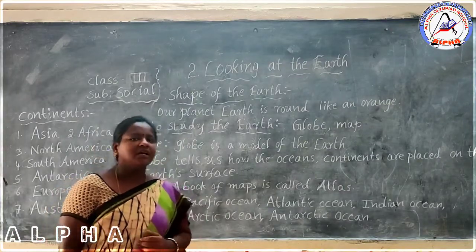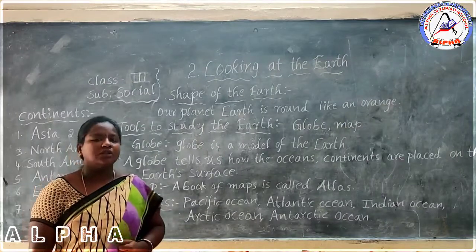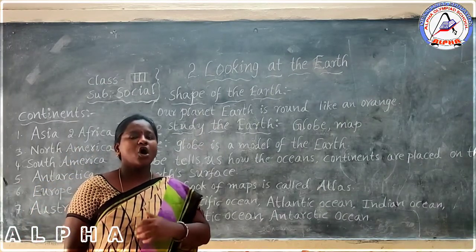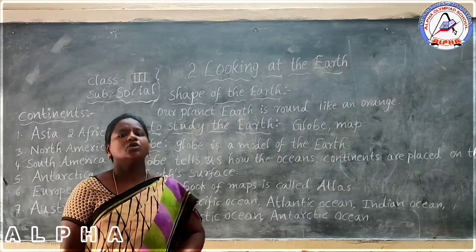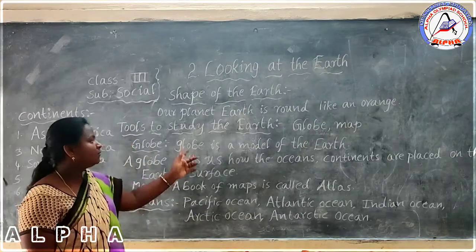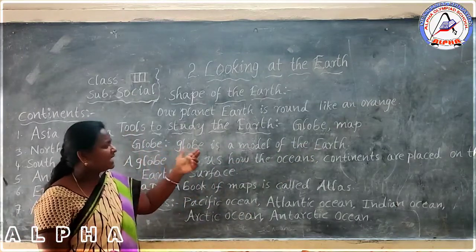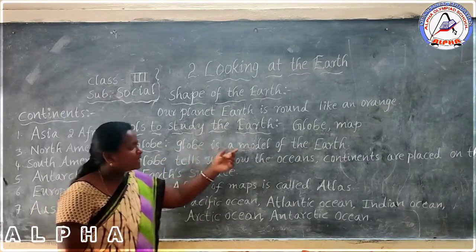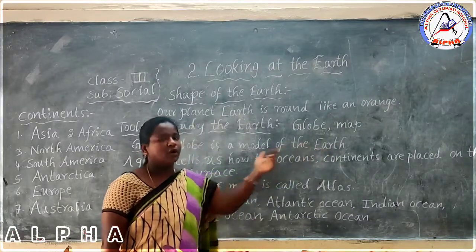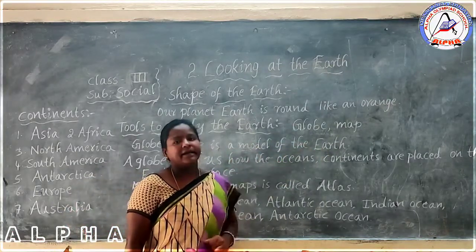Globe is in which color? Blue color. On the globe, we can find out larger areas. So globe is called a model of the earth. Globe is a model of the earth.